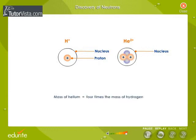However, it actually has four times the mass of hydrogen. This suggests that there is some other type of neutral particle present inside the nucleus along with the protons.